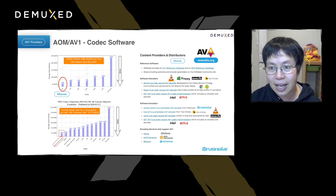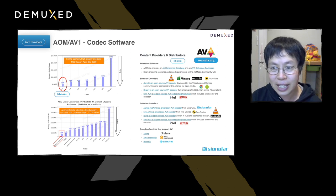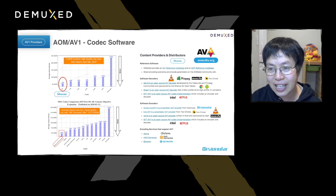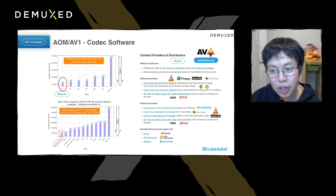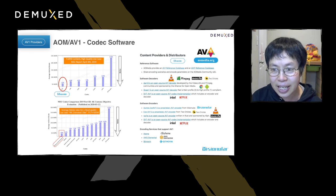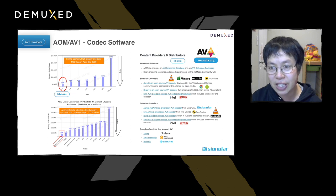There are also quite a few other decoder efforts going on. One leading effort is Dav1d, maintained by VideoLAN and FFmpeg, and sponsored by the Alliance for Open Media. We'll talk about Dav1d quite a bit later on. There is also libgav1, which is main profile 0 and high profile combined. Besides these, we also have our own commercial encoder, and Eve AV1 from Aureos also provides an AV1 encoder. All of these are currently mainly in the format of software.